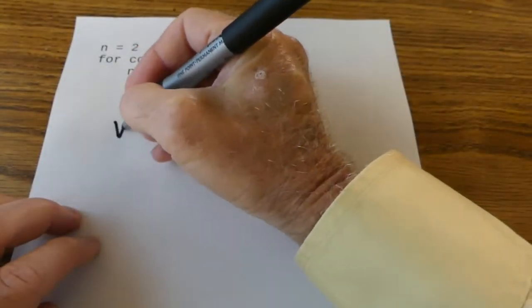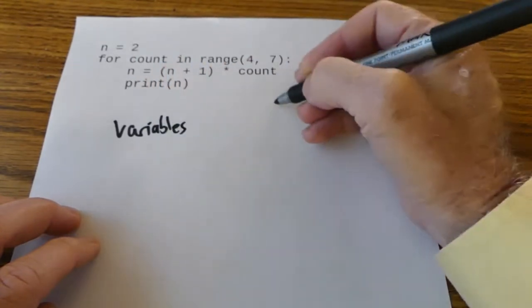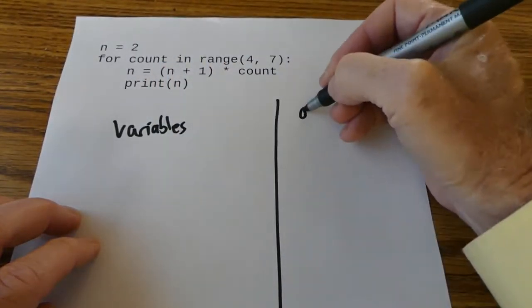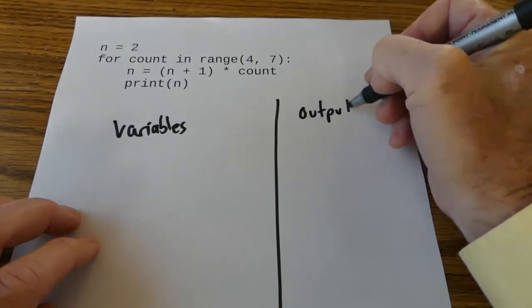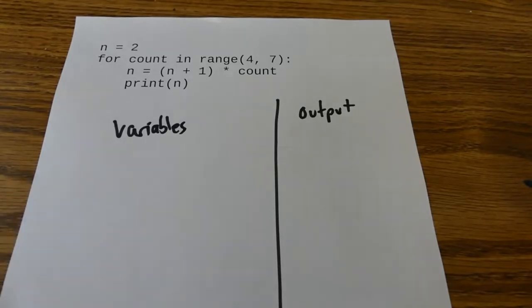On a piece of paper you have one section for your variables and you have one section that tells what output you're going to see. Then you go through this program step-by-step exactly as if you were the computer.